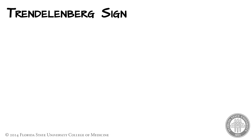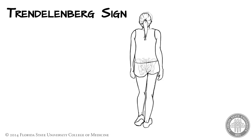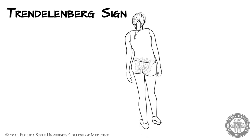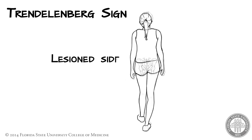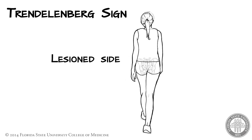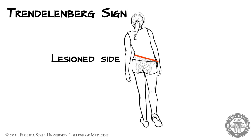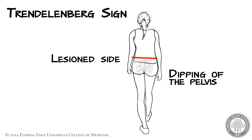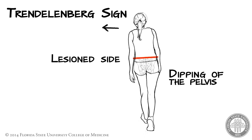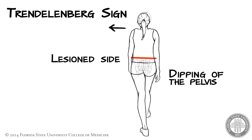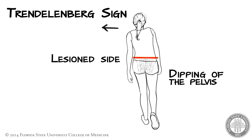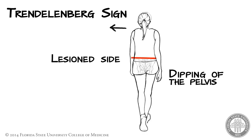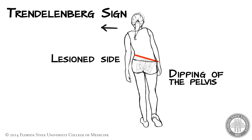The Trendelenburg sign is most apparent during the walking gait cycle. When the weight of the body is supported by the leg on the lesioned side, the pelvis rises ipsilaterally. This can more accurately be described as a dipping of the pelvis toward the contralateral side. Because the pelvis cannot be maintained in a level plane by the lesioned abductors, the patient falls toward the good side and simultaneously leans the torso toward the lesioned side in an attempt to maintain balance.